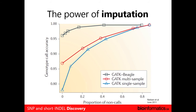This slide shows the power of using a single-sample approach versus a multi-sample approach in terms of genotype accuracy. You get a slight improvement looking at the proportion of non-calls, but the best overall result was using GATK combined with a program that's really good at imputation, like Beagle — and the genotype calling accuracy shot way up.